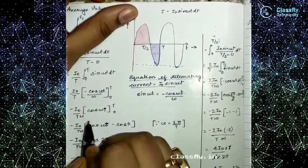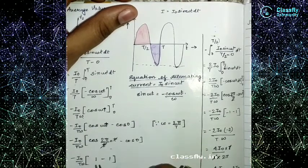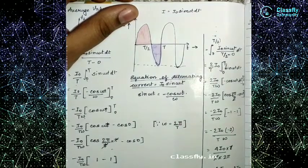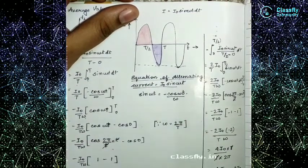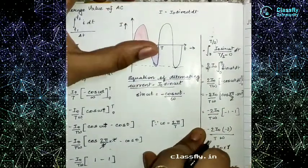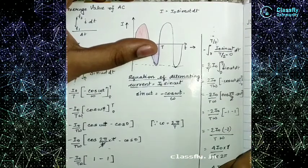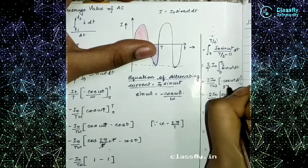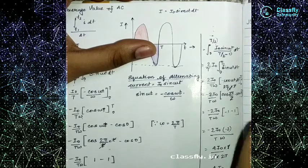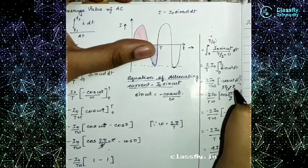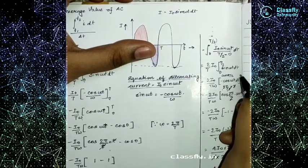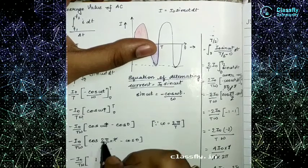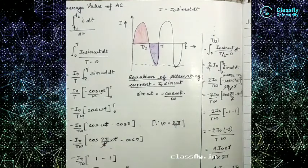Taking out ω, we substitute the upper and lower limits. Wherever there is t we substitute the values. For the full cycle: cos(ωT) − cos(0). For the half cycle: cos(ω·T/2) − cos(0). We know that ω = 2π/T, so ω·T = 2π and ω·(T/2) = π. So for the full cycle we get cos(2π) − cos(0), and for the half cycle we get cos(π) − cos(0).